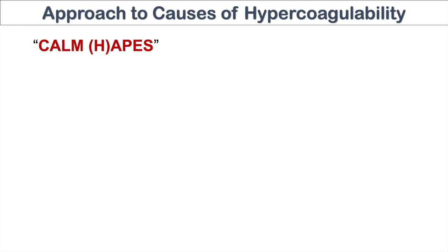That mnemonic is CALM APES — really CALM APES with a silent H. So it's CALM APES H, where the H is silent, to help make the mnemonic work. This is a mnemonic device or tool to help us remember the causes of hypercoagulability.